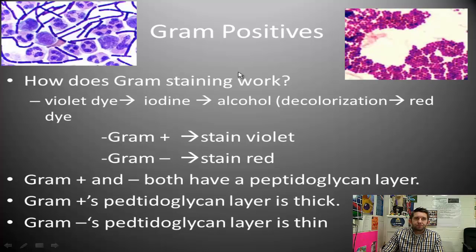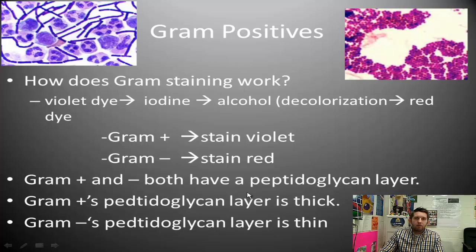The second type is gram positives. Gram staining is a way to classify bacteria based on the makeup of their cell wall. All members of the domain bacteria have a peptidoglycan layer. Bacteria termed gram positives have a very thick peptidoglycan layer, while those that are gram negative have a very thin peptidoglycan layer.